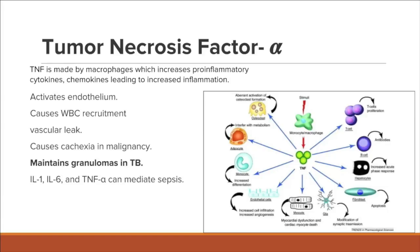Tumor necrosis factor alpha stimulates macrophages to produce cytotoxic metabolites, thereby increasing phagocytic killing activity. Here you can see a stimulus-activated monocyte or macrophage producing tumor necrosis factor alpha. It has effects on osteoclasts in the bone, leading to aberrant activation of osteoclast formation. Osteoclast activity causes breakdown of bone, so if this happens in the joint, it causes increased bone resorption, joint space narrowing, and a lot of inflammation.